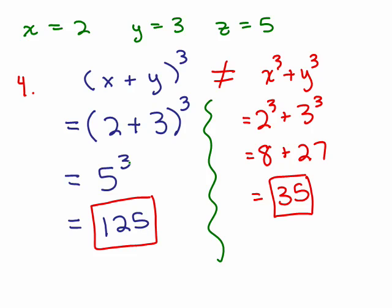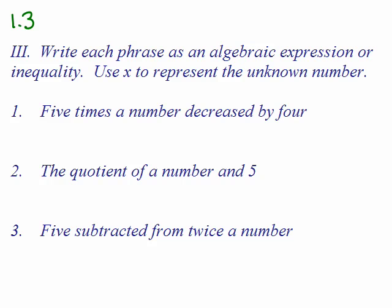That's the end of part 2 for 1.3. We're going on to 1.3 part 3 now. It says: write each phrase as an algebraic expression or inequality, use x to represent the unknown number. So what do we have here? "5 times the number decreased by 4." When it says decreased by 4, that means you're taking away 4.